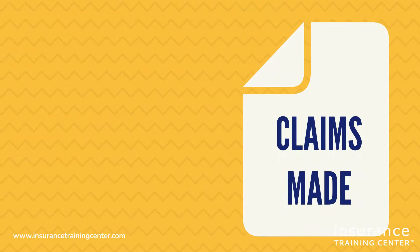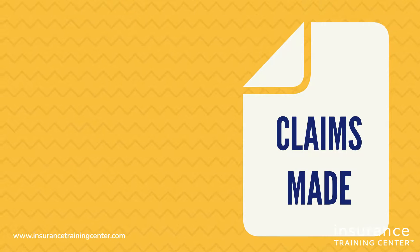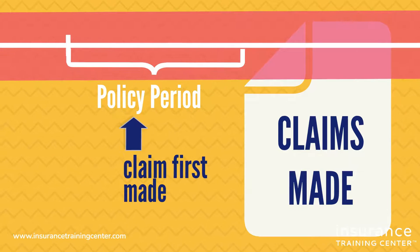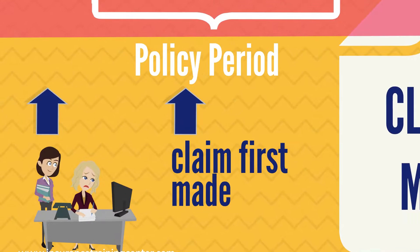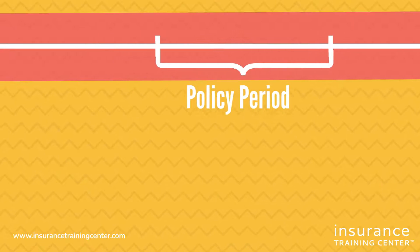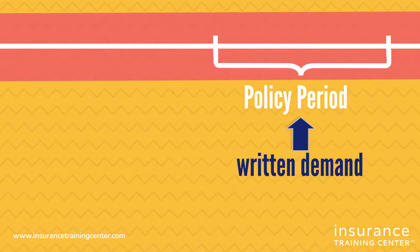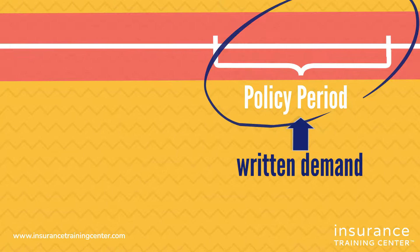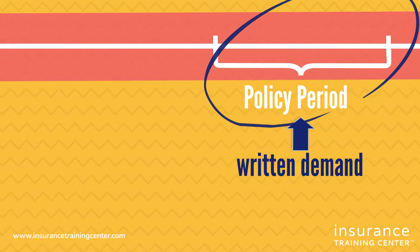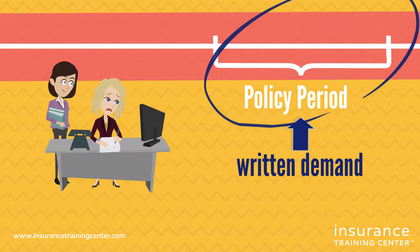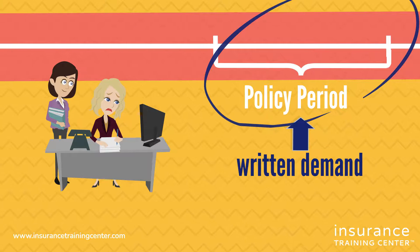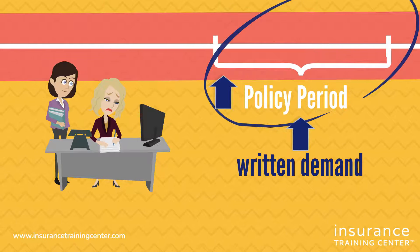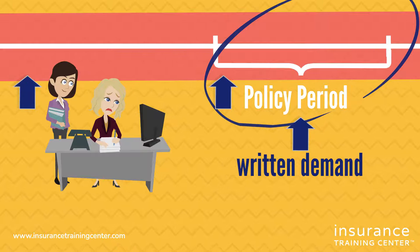In contrast, with a claims-made policy, coverage is determined by when the claim is first made against the insured for a past event. The claim against the insured — for example, the written demand — must occur during the policy period in order for it to be considered for coverage, regardless of when the wrongful act occurred. The wrongful act may have happened during the policy period, or possibly long before that policy was incepted.